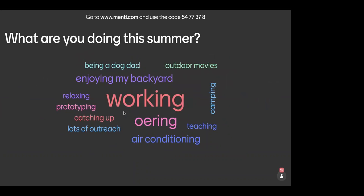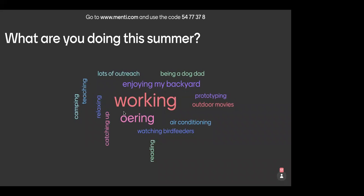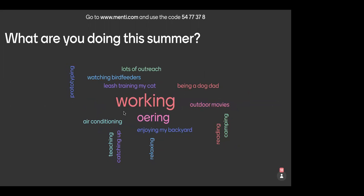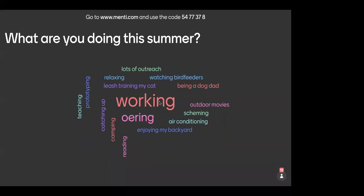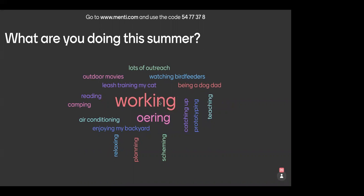Prototyping, catching up, outdoor movies, being a dog dad — these are so fun. Teaching, camping, outreach — of course the dog dad is Jeff. Leash training a cat — that's awesome! I wish I could leash train my cats; instead I put them in a stroller to take them for walks because they just won't walk on the leash. Watching bird feeders, reading. It sounds like we have very relaxing and also productive summers ahead of us!